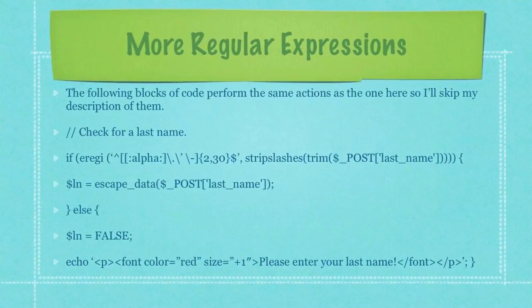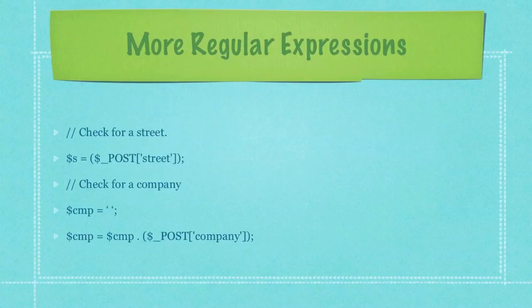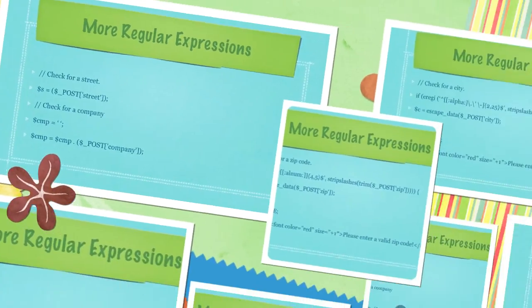The following blocks of code perform the same actions as the one here, so I'll skip my description of those. You can also find my regular expressions tutorial down below. Here we're checking for an email address. Here we're checking for street. You can see in here we'll basically accept anything. In my regular expressions tutorial I actually use a lot more advanced regular expressions, but I'm just keeping this real simple.